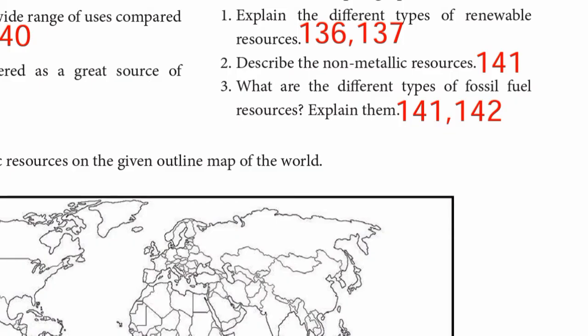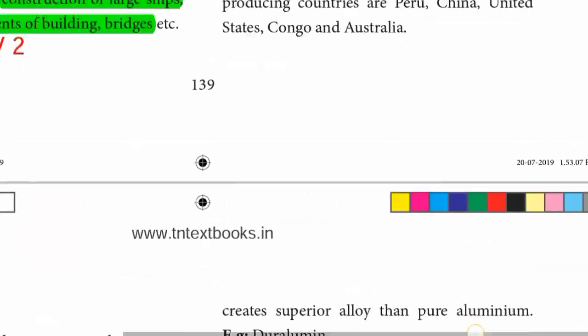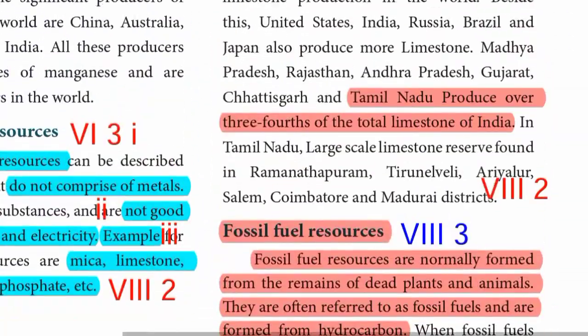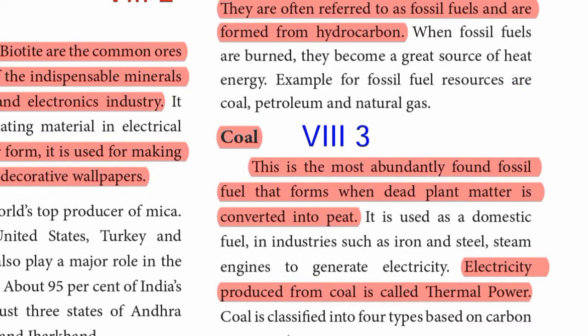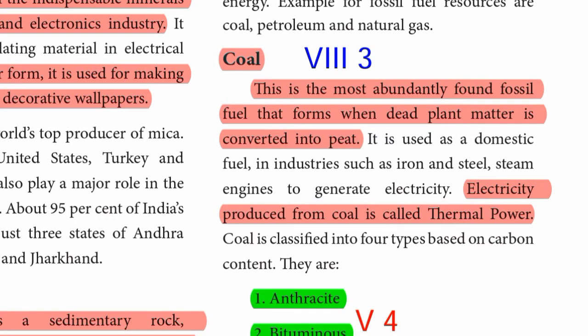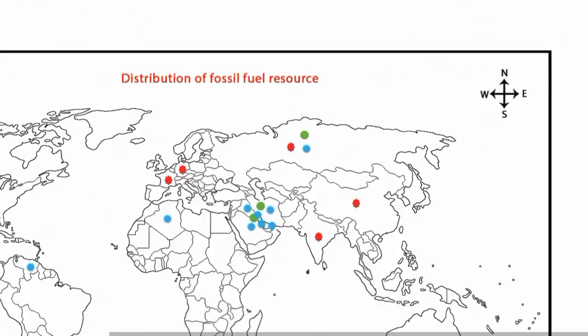Third question: What are the different types of fossil fuel resources? Explain them. Page numbers 141 and 142. Fossil fuel resources are normally formed from the remains of dead plants and animals. They are often referred to as fossil fuels and are formed from hydrocarbons. Coal: this is the most abundantly found fossil fuel that forms when dead plant matter is converted into peat. Electricity produced from coal is called thermal power. Coal is classified into four types: anthracite, bituminous, lignite, and peat.